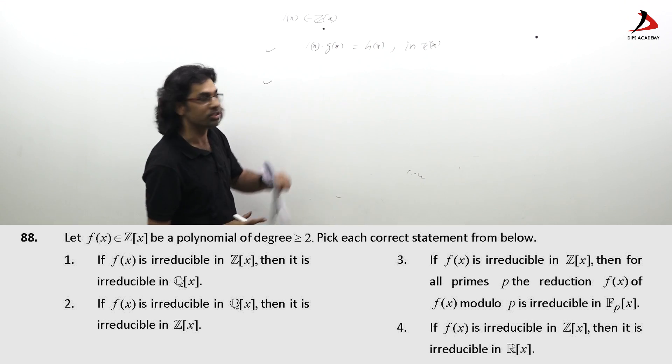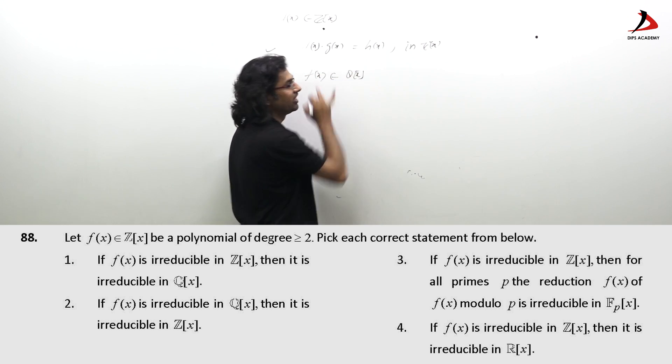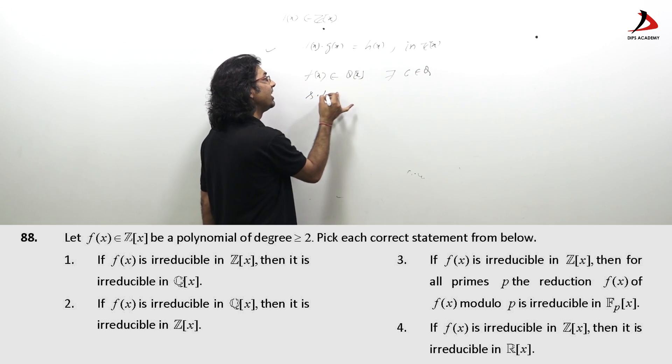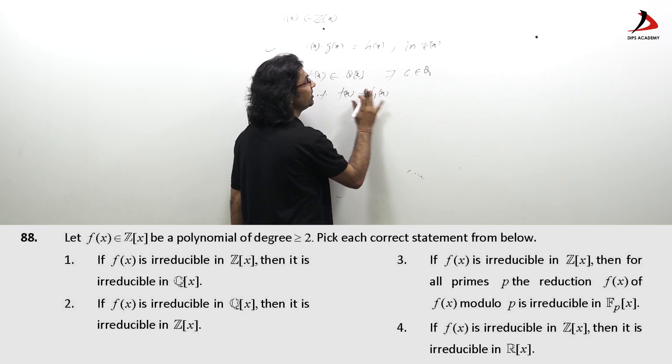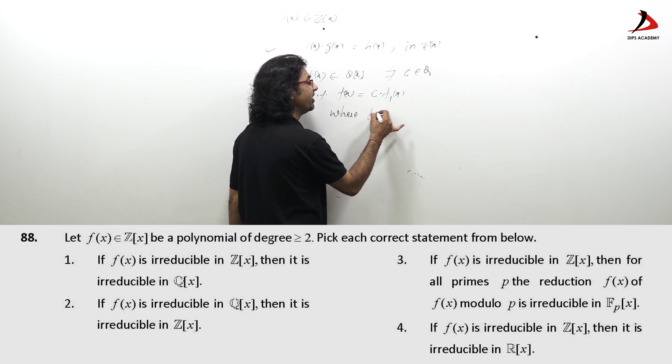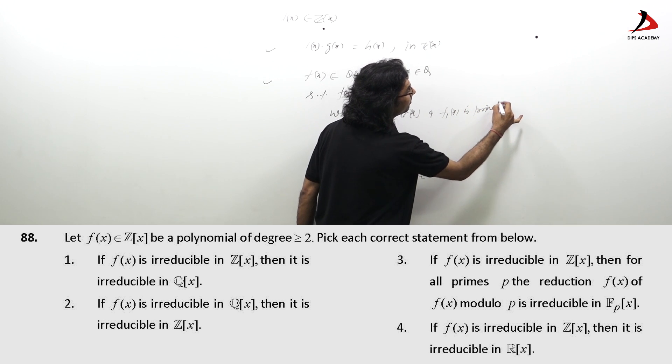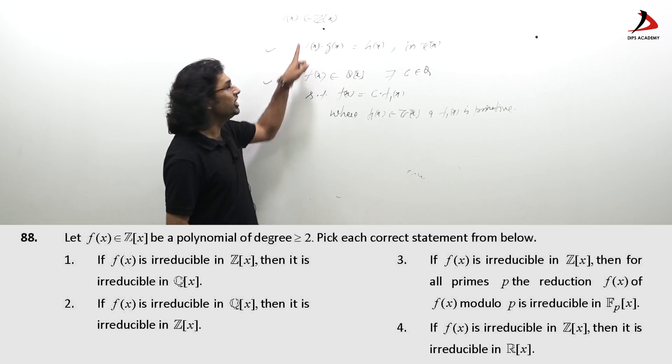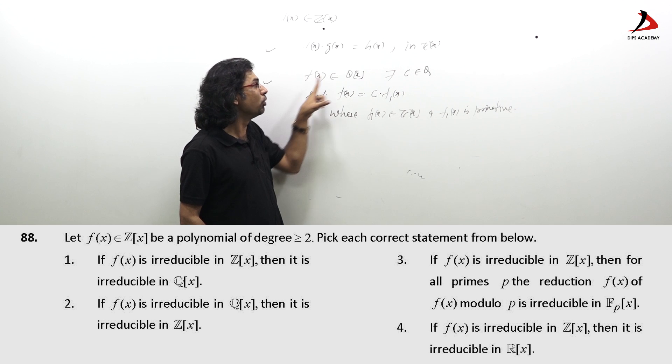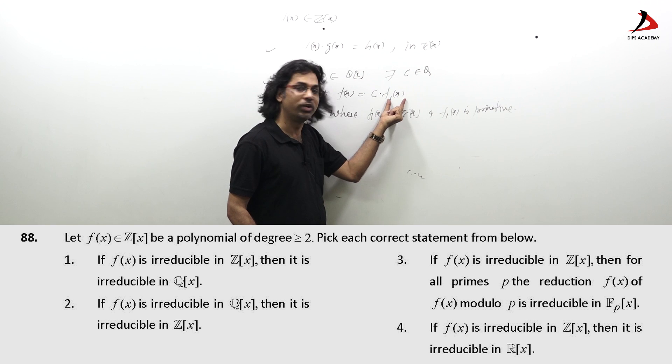Now, second is, if f(x) belongs to Q[x], then there exists c belongs to Q such that f(x) can be written as c into f1(x) where f1(x) belongs to Z[x] and f1(x) is primitive. These two results one should remember that product of primitives is primitive in Z[x] and second that if we have a polynomial over Q, we can always express that some rational multiple of a polynomial over integers.